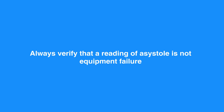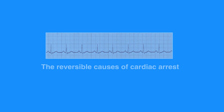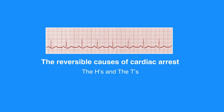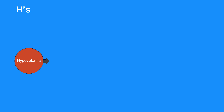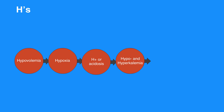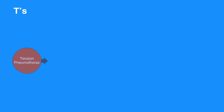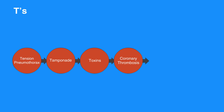Always verify that a reading of asystole is not equipment failure. Make sure patches make good contact with the individual, all cables are connected, gain is set appropriately, and the power is on. The reversible causes of cardiac arrest are the H's and the T's. The H's include hypovolemia, hypoxia, H+ or acidosis, hypo- and hyperkalemia, hypoglycemia, and hypothermia. The T's include tension pneumothorax, tamponade, toxins, coronary thrombosis, pulmonary thrombosis, and unrecognized trauma.